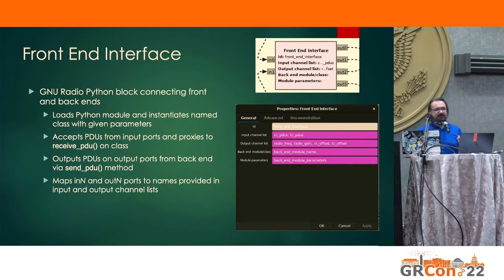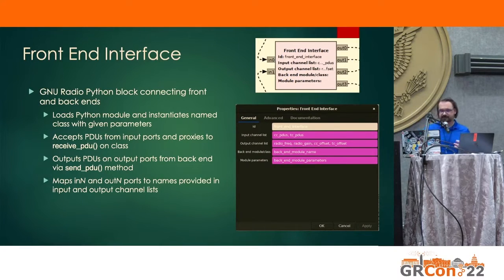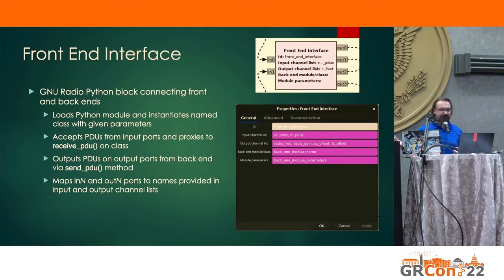A minor but nice feature is the input and output channel list parameters, which are comma-separated names to assign to the ports. As you add more items to these lists, the number of ports on the block increases — they're by default called in0, in1, in2, in3 — but this facility lets you map those generic port names into something more meaningful for the application.